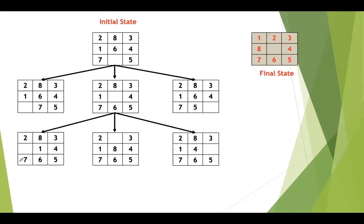Let us take this example. This is our initial state and this is the final state. First, we need to find out the heuristic value. h is the number of misplaced tiles, and along with that we need the g value, which is the depth of the node. As this is the root node, g value will be 0 for this.